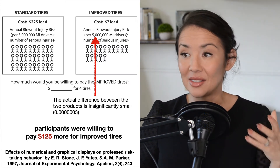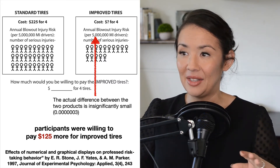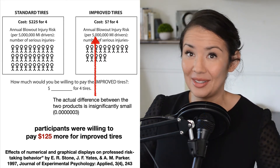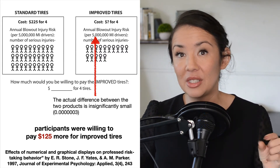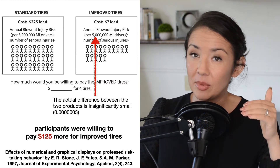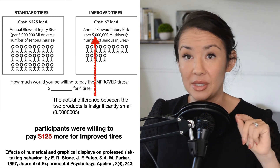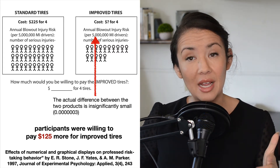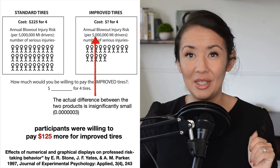When you see visualizations like this, it's so hard not to focus on the icons of the people and see that there are twice as many icons on the left than on the right, making the tires on the left seem twice as risky. So it's really important to be an informed information consumer — read all of the label information when you see any information presented to you, but in particular visualizations, because they can focus your attention on what they want you to focus on and may lead you to the wrong conclusion.